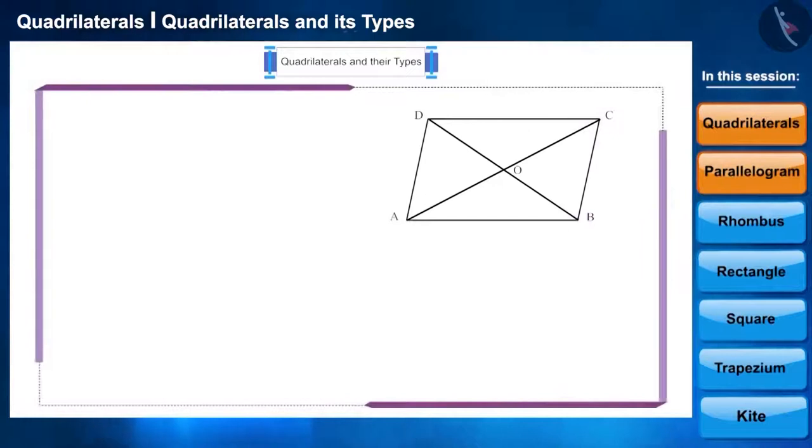If a quadrilateral has a characteristic that its opposite sides are parallel, then these types of quadrilaterals are called as parallelogram.